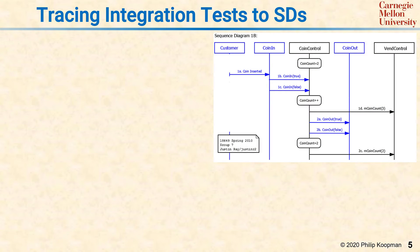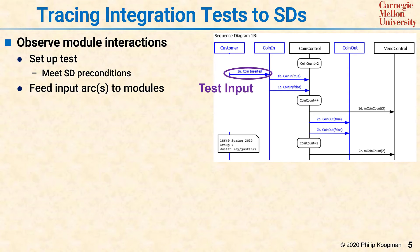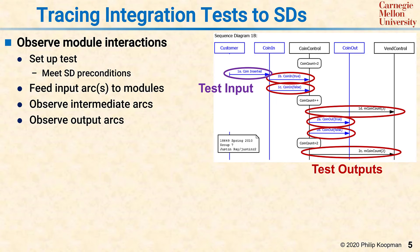It's important to realize that the point of an integration test based on a sequence diagram is not simply the end result. In this example, there's a sequence diagram that shows a vending machine that takes two coins for a purchase, receiving a third coin and refunding it automatically, going back to two coins inside the machine ready for a purchase. The integration test for this sets up the machine, makes sure that the machine thinks it already has two coins, and then pops in another coin. The remainder of the test is observing the coin-in signal arrives, the coin count increases and it thinks it has a third coin, then it refunds the coin by exercising the coin-out actuator, and the coin count goes back to two.